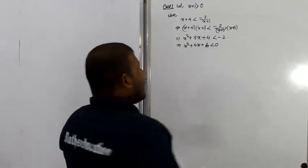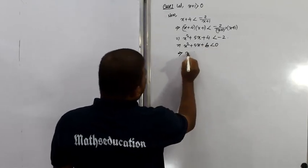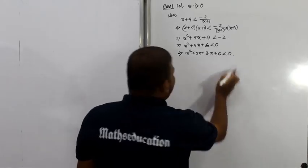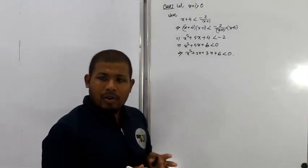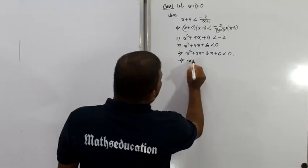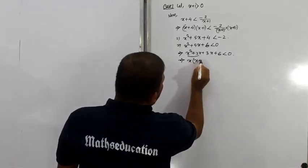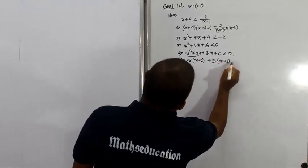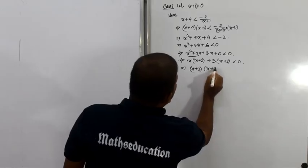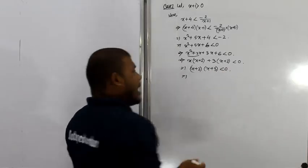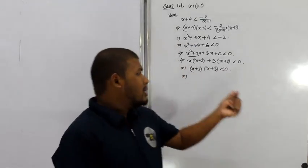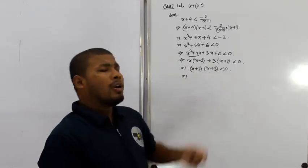So I will factorize by splitting the middle term. x squared plus 2x plus 3x plus 6 is less than 0. This gives x times x plus 2 plus 3 times x plus 2 is less than 0, which implies x plus 2 into x plus 3 is less than 0. So the product of the two quantities x plus 2 and x plus 3 is negative.